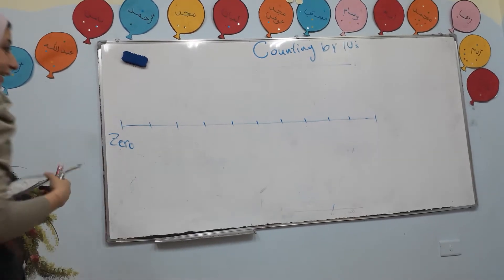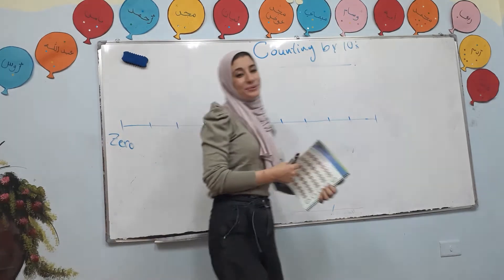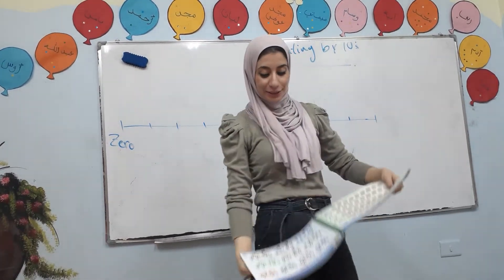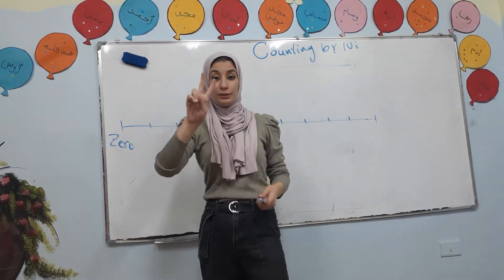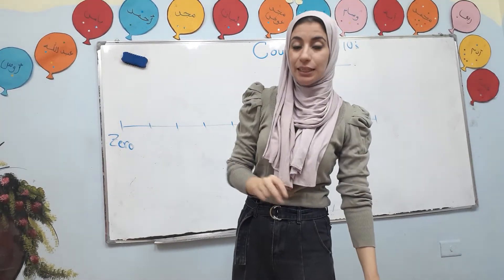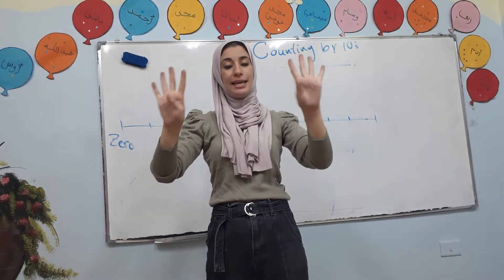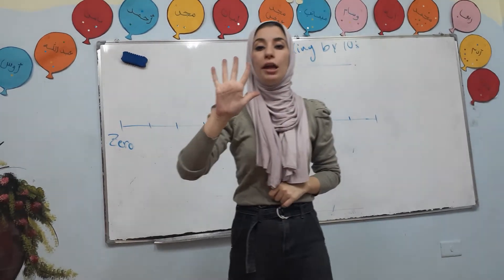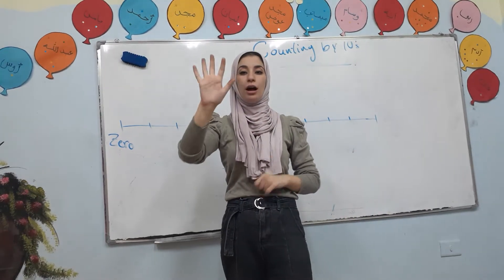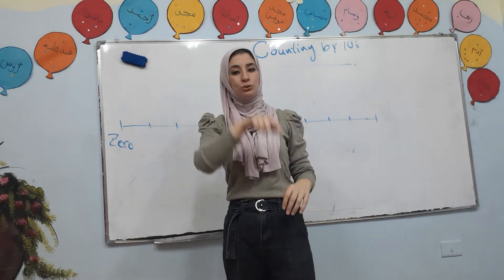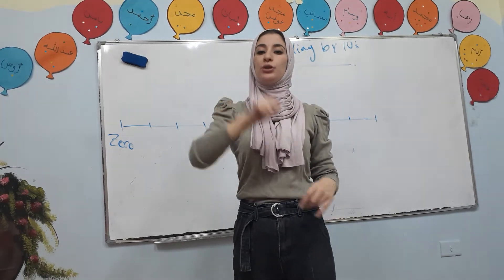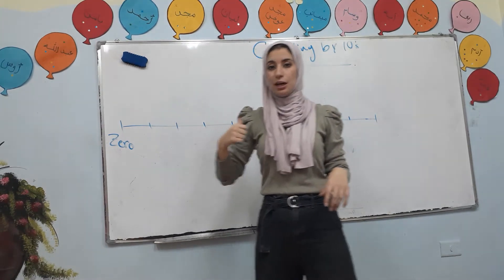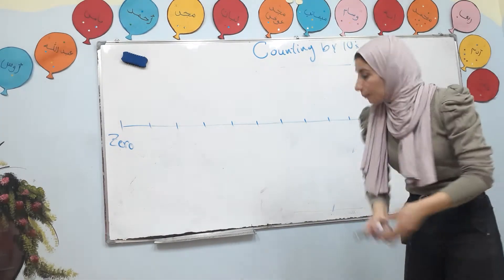Good morning, first grade! How are you today? I hope you find this video. I miss you all. Last time we talked about counting by twos — two, four, six, eight, ten — and we talked about counting by fives: 10, 15, 20, 25, 30, 35, 40, 45. This time we will talk about counting by tens.